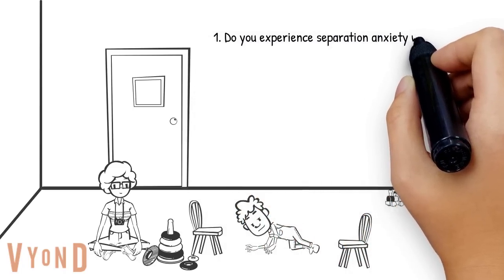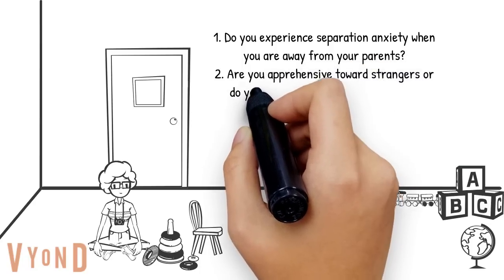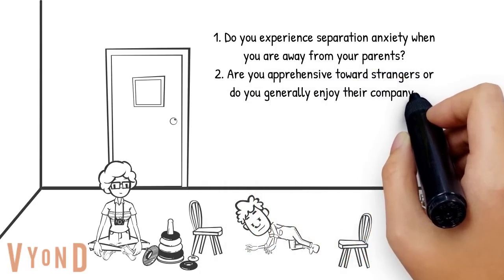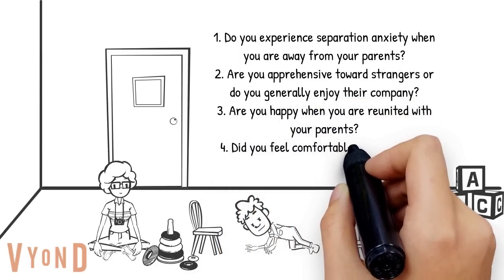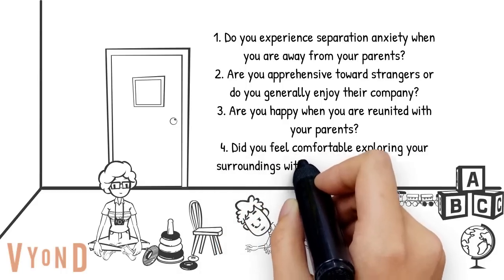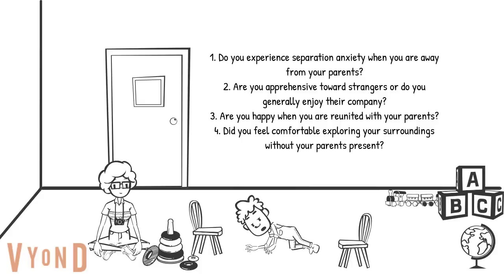Ainsworth identified four attachment styles. Before we get into those, think about whether you were distressed when you had to leave your mother or father — did you experience separation anxiety? How were you towards strangers — generally friendly or not? When your parents left, were you happy to see them return? Did you feel comfortable exploring your surroundings, or did you need your parents with you a lot of the time as a child?